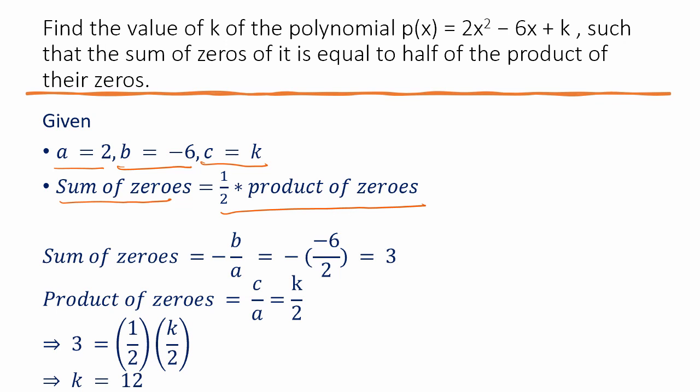They've given these values and the relationship between sum and product of zeros. We know that sum of zeros is -b/a. So, using that, we can find out that it is 3. By definition, we know product of zeros is c/a. So, using that, we can find out it is k/2. Then, using those two, we can solve k equals 12.